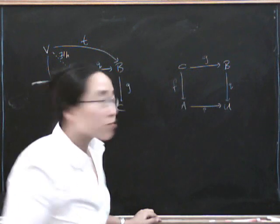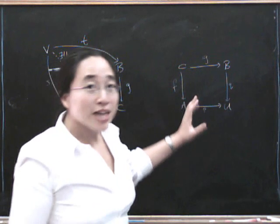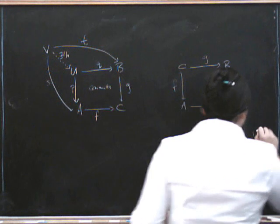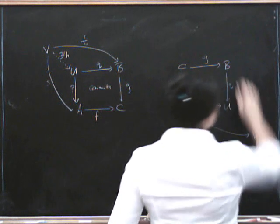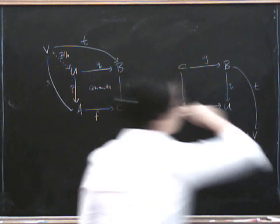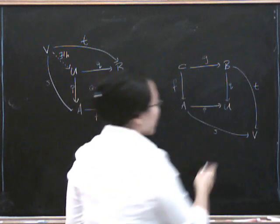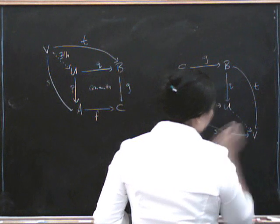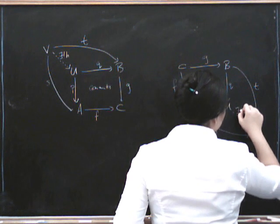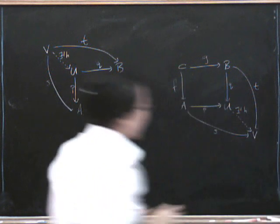And now we need a universal property, which is that this one's got to be the best one out of all those commuting squares. So we're going to say given any other one together with, so given any V together with maps S and T making the outside of this commute, there has to be a unique factorization in that direction. So there is a unique factorization, H.